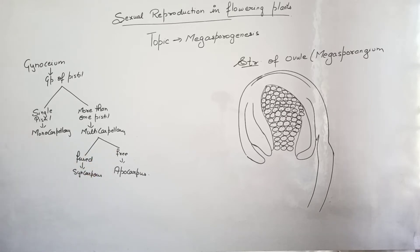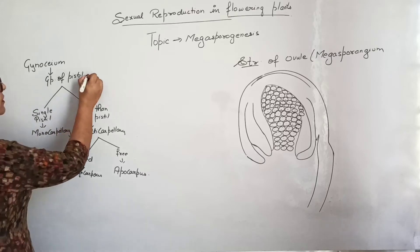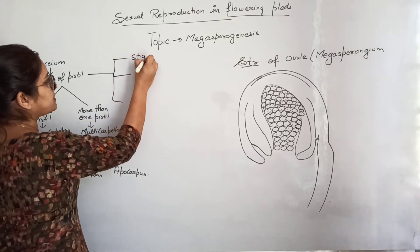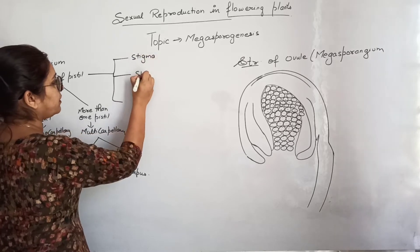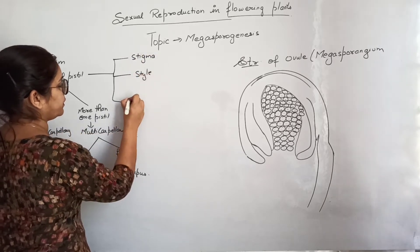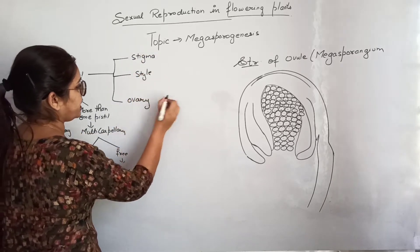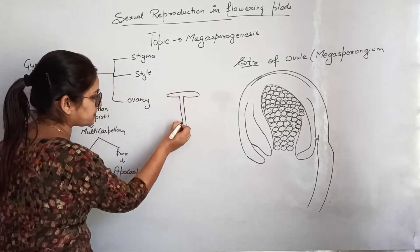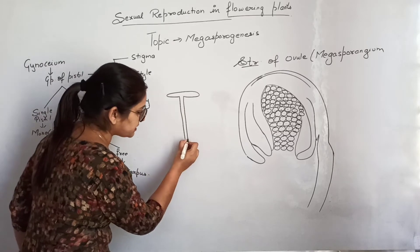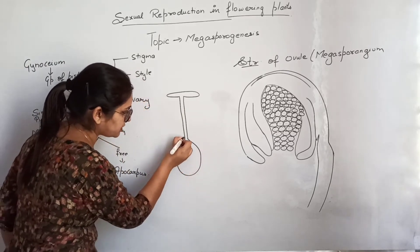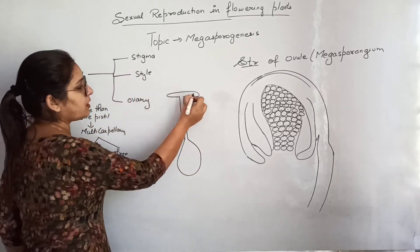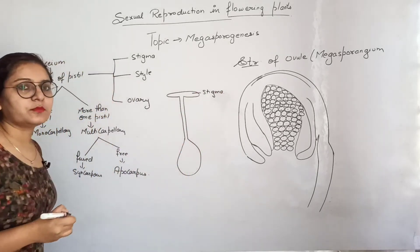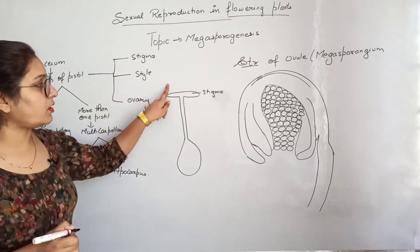If the ovary is free, it is called apocarpous condition. Each pistil consists of stigma, style, and ovary. The bulge portion is called stigma, the tubular structure is style, and the basal bulge portion is ovary. The stigma is the landing platform for pollen grains.